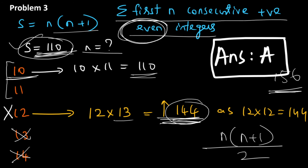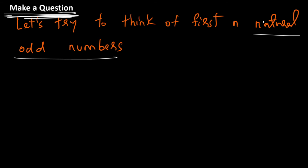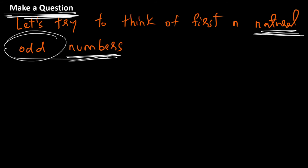Now let's proceed and make a similar question. Remember, try to keep doing this throughout your preparation — it will ensure that what you think you have learned is actually something you have learned. In the previous question we had the sum of the first n positive even integers; here, let's think about the sum of the first n natural odd numbers.